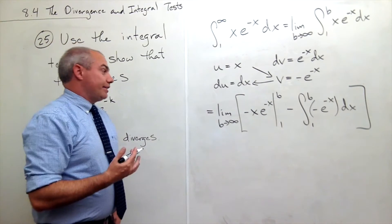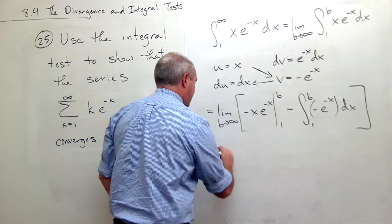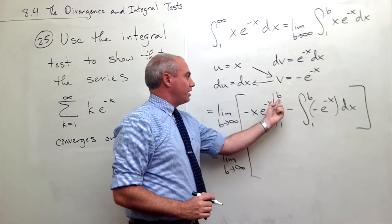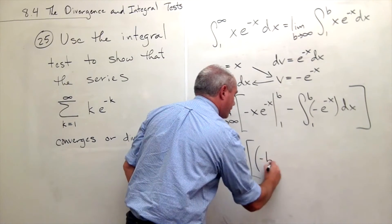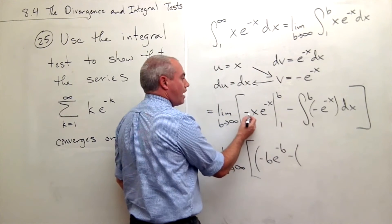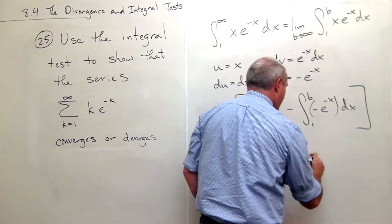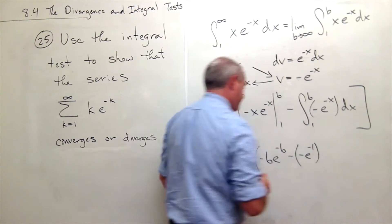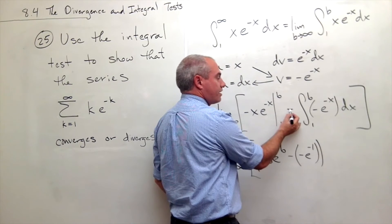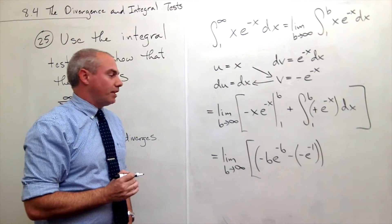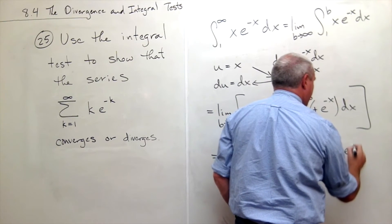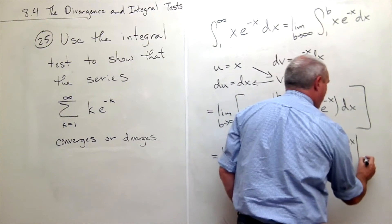Let me rewrite this more cleanly. We still have the limit as B goes to infinity. Evaluating the uv term: plugging in B gives negative Be to the negative B, and plugging in 1 gives minus e to the minus 1. For the remaining integral, the two minuses combine to a plus, so the antiderivative of e to the minus x gives minus e to the minus x, evaluated from 1 to B.